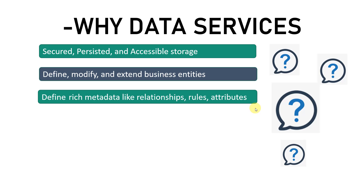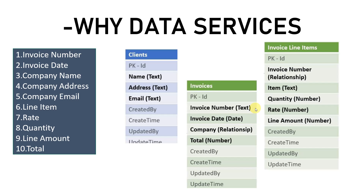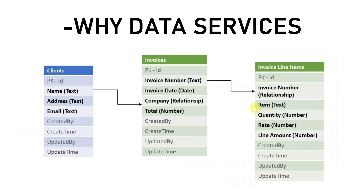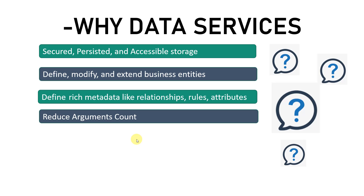Next we can define rich metadata like relationship rules and attributes. We can create different entities with data services — client, invoices, and invoice line items — and design relationships between them. For example, the client entity name is related to the company field of the invoices entity. Similarly, the invoice number in the invoices entity is related to the invoice number in the invoice line items entity. This reduces the number of arguments used in UiPath Studio.